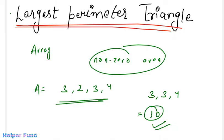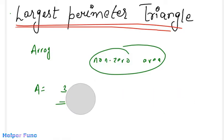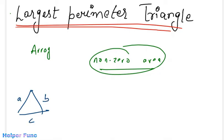Now what do we mean by non-zero area? Non-zero area means that there must be a triangle formed first, then we need to calculate the perimeter. So let's say we have this triangle with sides A, B and C.